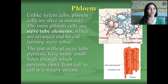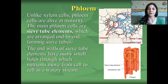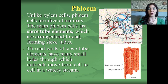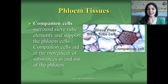The next type of plant tissue is called phloem — phloem is for food. Unlike the xylem cells, phloem cells actually stay alive when they're at maturity. The main type of cells are called sieve tube elements, which are arranged end to end, forming sieve tubes. Companion cells support the sieve tube elements — their sole purpose is to help out the sieve tube elements. The end walls of the sieve tube elements have many holes through which nutrients move from cell to cell in a watery stream. Companion cells aid in the movement of substances into and out of the phloem.